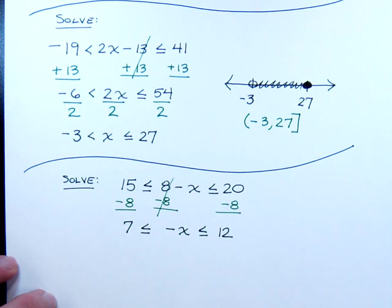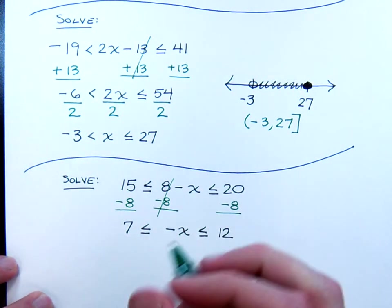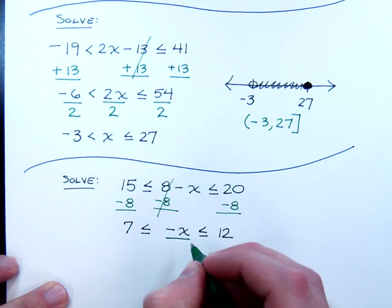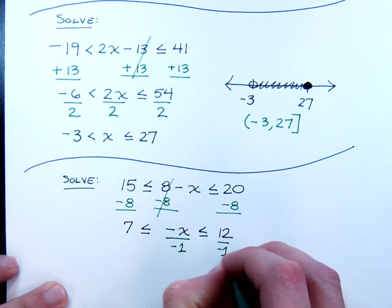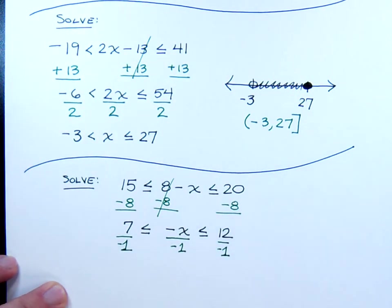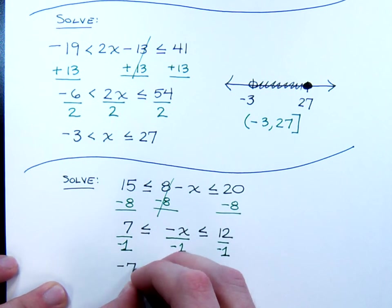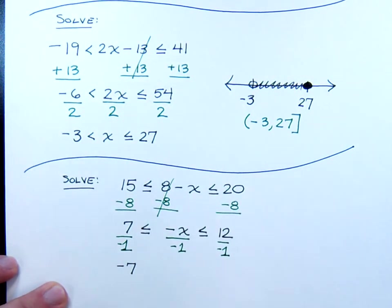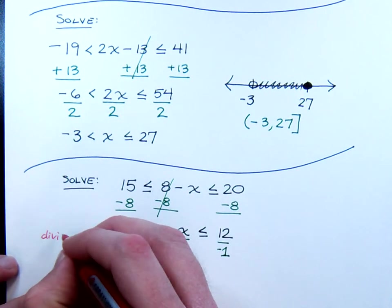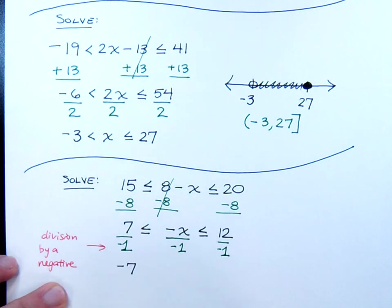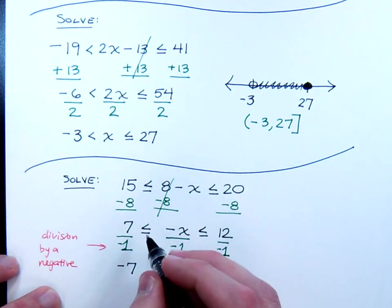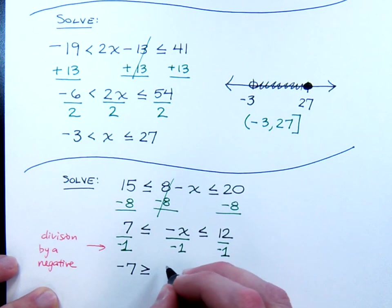Now, we almost have x by itself. What's the last thing I need to do to finish solving for x? You guessed it. That's dividing by this coefficient. Now, what's the coefficient of negative x? It's just negative 1. So divide everything by a negative 1. And so now we have negative 7. Oh, wait a minute. Do you remember that? If you divide by a negative, and we talked about how if you divide both sides of an inequality by a negative, the inequality symbol is going to have to change directions. And that's still going to be true for these compound inequalities. So this will no longer be less than or equal to. It's going to be greater than or equal to x, and this guy is going to switch around as well, greater than or equal to negative 12.